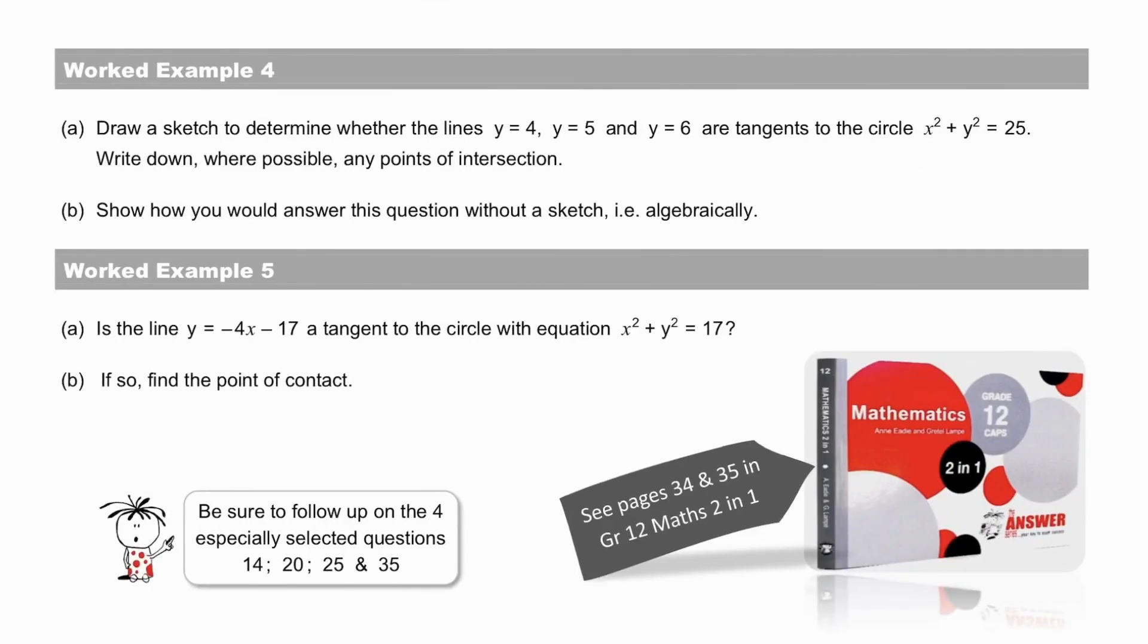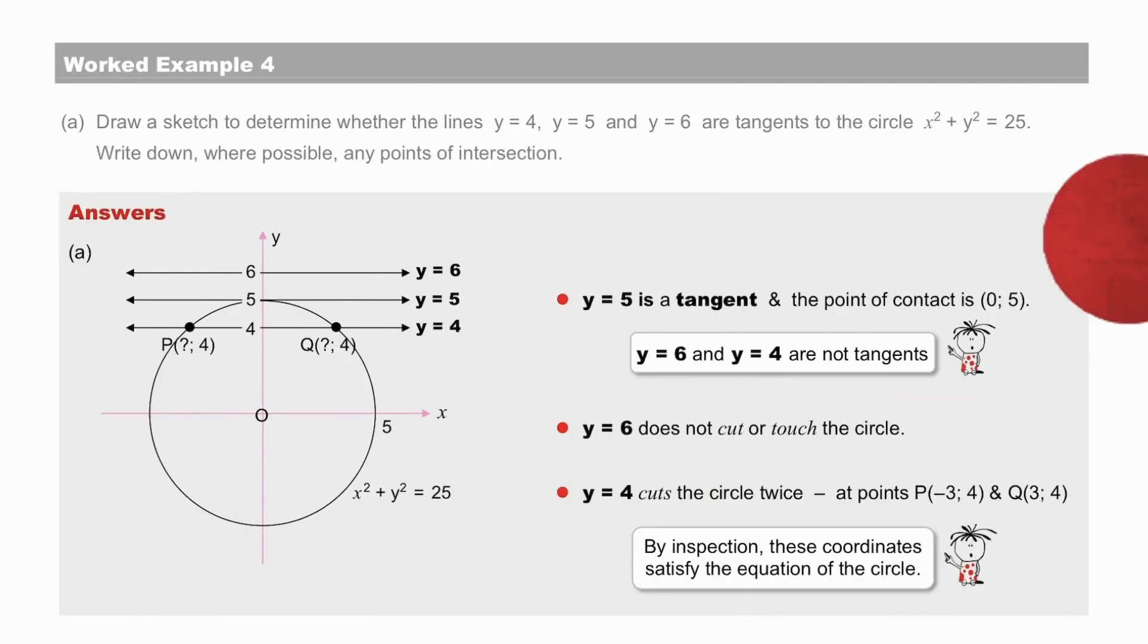Pause to do these two worked examples. Pause to check your solutions to A. See the clear graphical illustration of the three options. Line y equals 4 cuts the circle in two points, and we say it is a secant. Line y equals 5 touches the circle here, and this is then a tangent. Line y equals 6 does not cut or touch the circle. Note our point of contact, 0, 5 of the tangent, and our points of intersection of the secant.